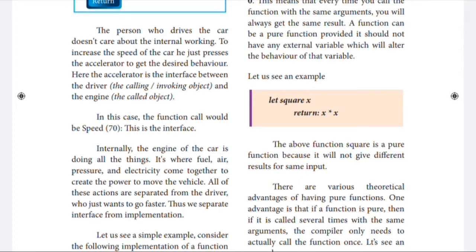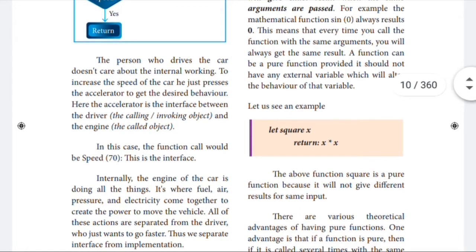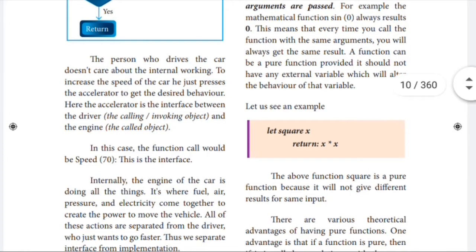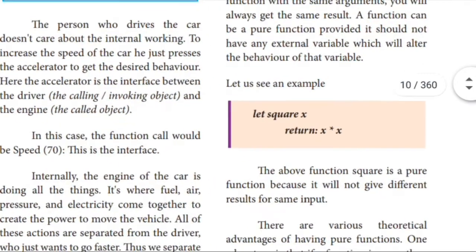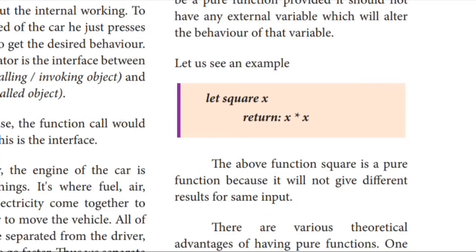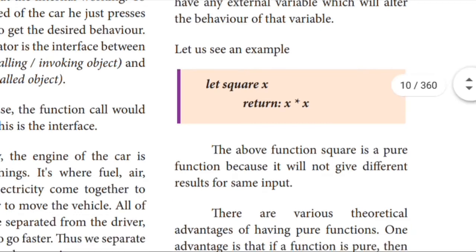Let us see an example. Let square x — here we are going to square a number. The function name is square. 'Let' is a keyword used here to mention that it is a separate function. X is a variable. Return x star x — it means you are going to square a number and you are just returning back the output. So here direct input and direct output process is going on, returning to the main program. It is known as pure function.